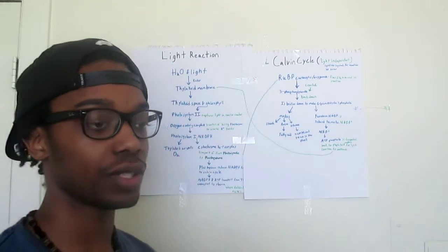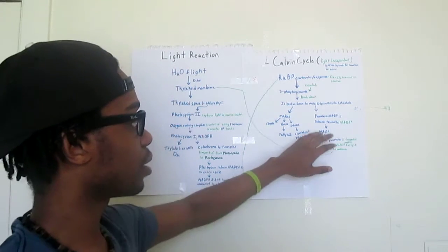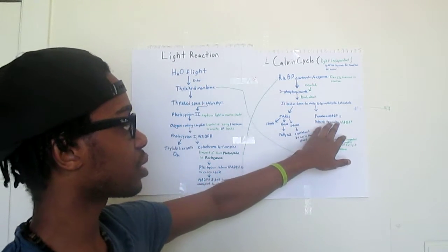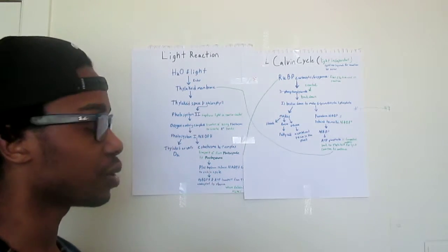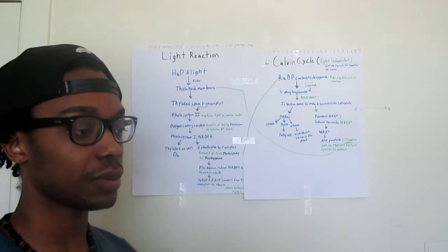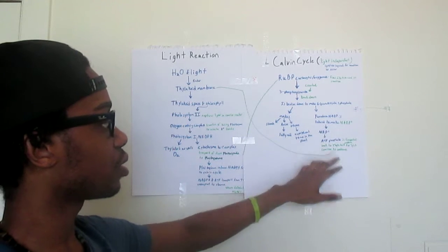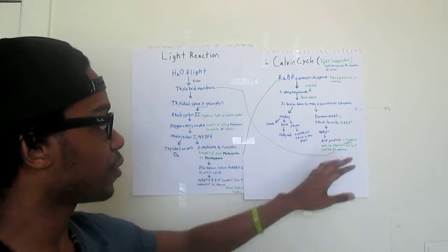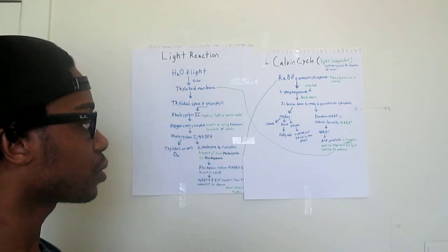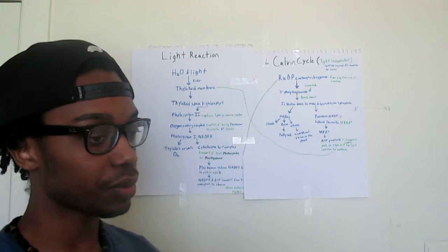The other part is the ferredoxin NADP, which is reduced to make NADPH. The NADPH with the ATP phosphate is transported back to the thylakoid membrane for light reaction to continue.